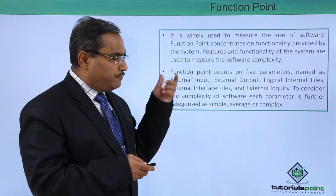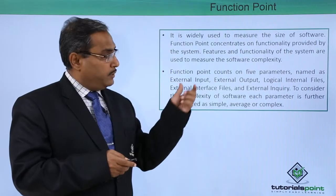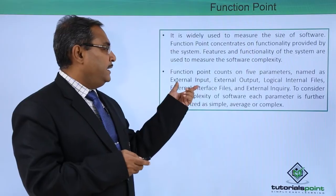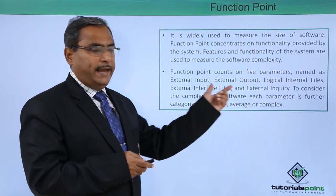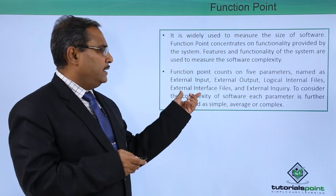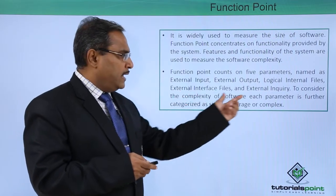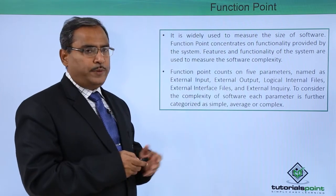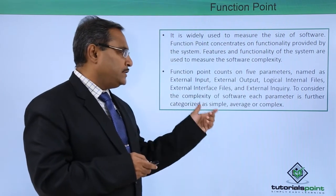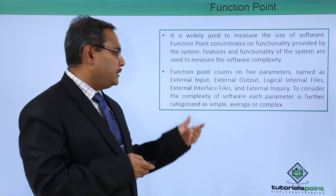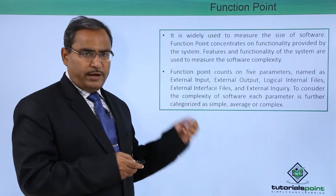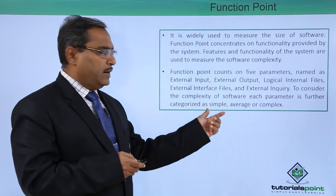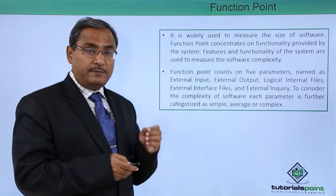Function point counts on 5 parameters: external input, external output, logical internal files, external interface files, and external inquiry. These are the 5 parameters which will be counted here. To consider the complexity of the software, each parameter is divided into 3 different categories: simple, average, and complex.